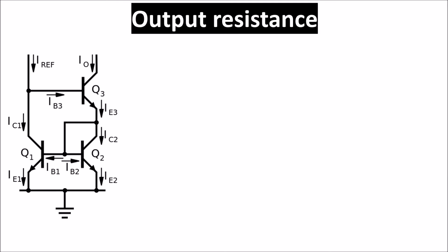In order to calculate the output resistance, which tells us how stable is the output current regardless of the applied load, we put a test voltage on the output and we measure the current created. The ratio V test divided I test gives the output resistance.